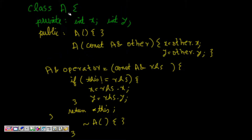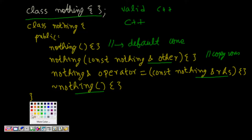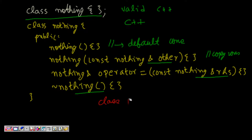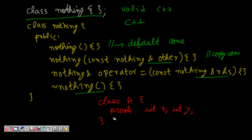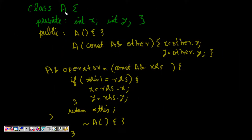Now let's see what happens if the class has member variables. Say we have 'class A' with private 'int x' and 'int y'. Let's see what will be generated in this case. C++ keeps x and y as private, then under public it creates the default constructor.